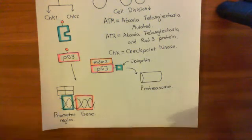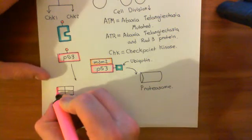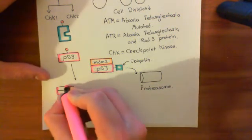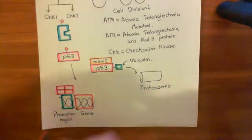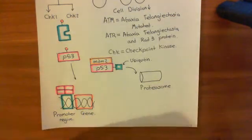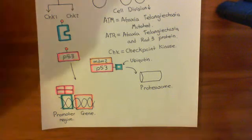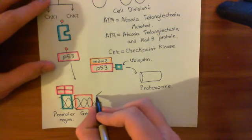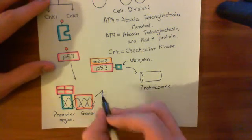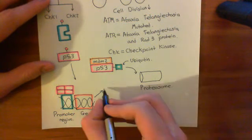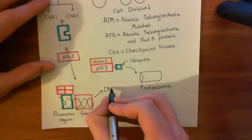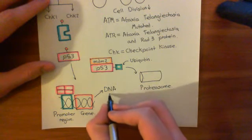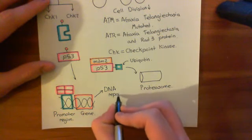P53 is such a transcription factor, but it works in tetramers. P53 will form tetramers and then the tetramer of P53 will act as a transcription factor, increasing the expression of a huge number of different genes. First and foremost, it will increase the expression of proteins involved in DNA repair.